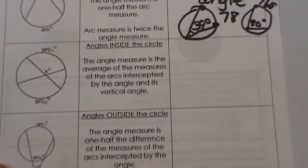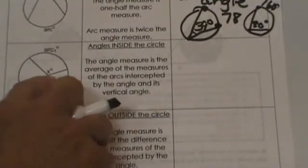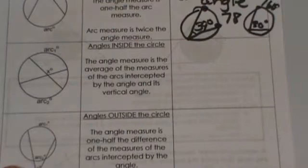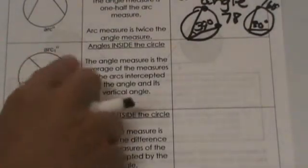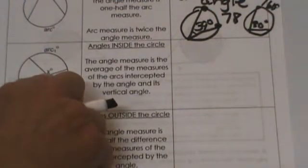Now we are going to look at our two new cases. What happens if we have an angle that is in the circle but it is not at the center. I call this a nomadic angle. It is wandering somewhere in the circle and it is not in the center.